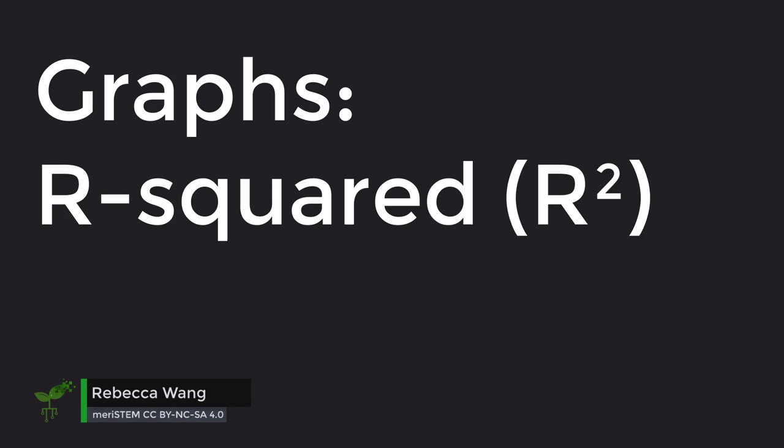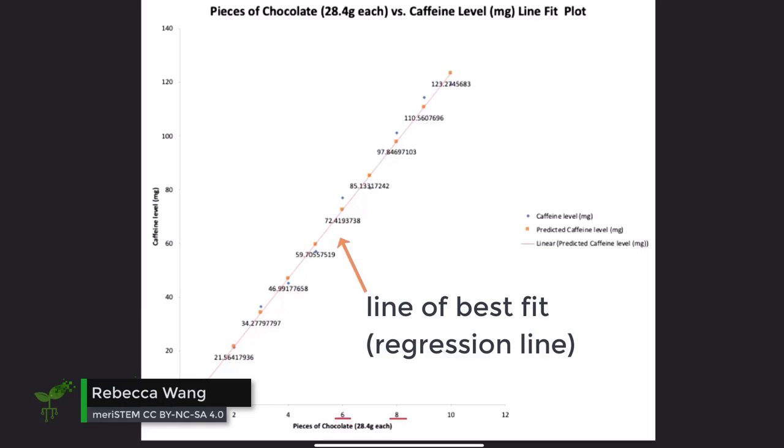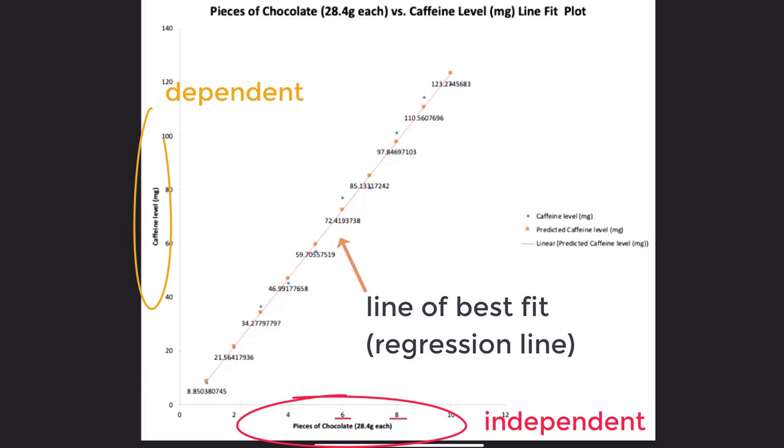As we have shown in the previous video, the line of best fit or the regression line, the orange line going through the predicted values, shows the predicted relationship between the independent and dependent variables.